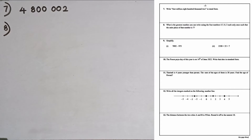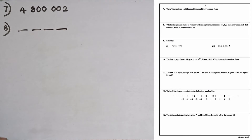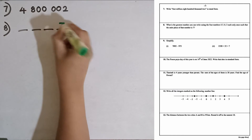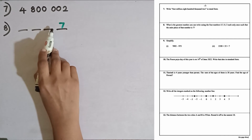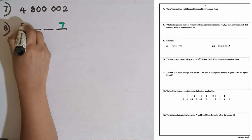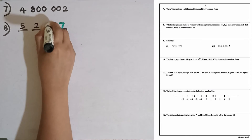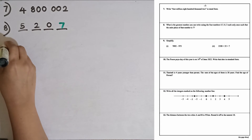Question number eight: what is the greatest number you can write using the four digits 5, 7, 0, 2 each only once, such that the units place of the number is 7? The units place is given as 7. For the other three blanks, the next highest digit is 5, then 2, then 0. So the maximum number for this question is 5,207.